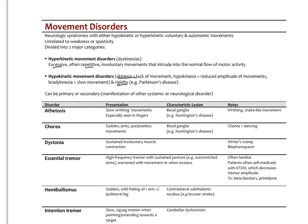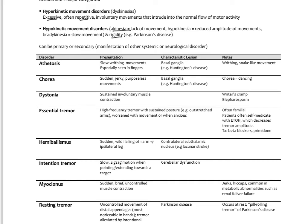A couple of terms important to know in the context of movement disorders: athetosis means slow writhing movements, especially in the fingers, and is characteristic of Huntington's disease. This is always an issue of damage to the basal ganglia, which are a deep cortical region serving as a motor regulation center, helping to filter unwanted motor impulses descending from the cortex. Athetosis would present as writhing, snake-like movements.